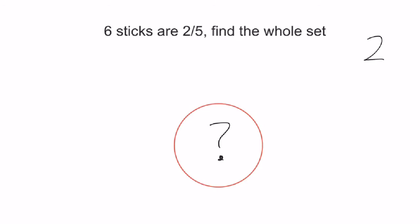But I can still use my denominator to tell me how many sections to split the whole into. And in this case, it's 5. The whole part, the whole set, was split into 5.